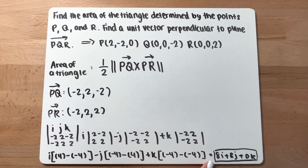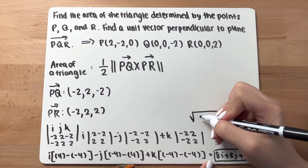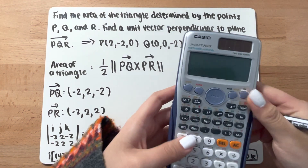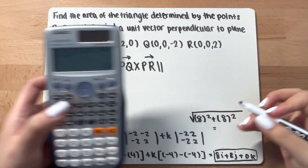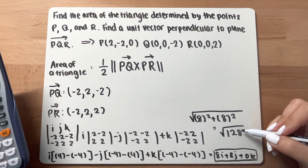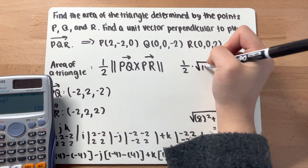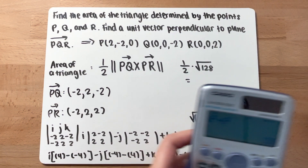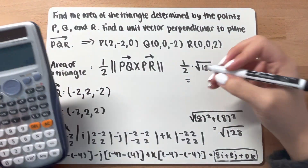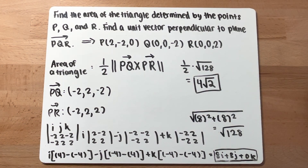Now find the magnitude: square root of (8 squared plus 8 squared) = square root of 128. The area of the triangle is one-half times the magnitude, so one-half times square root of 128 equals 4 root 2. This is the area of the triangle determined by points p, q, and r.